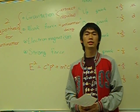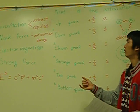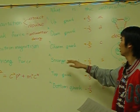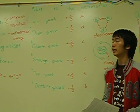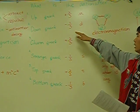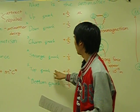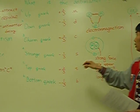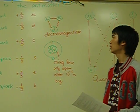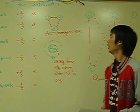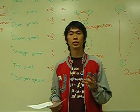The proton is made by three quarks. There are six quarks in our universe: up quarks, down quarks, charm quarks, strange quarks, top quarks, and bottom quarks. They have two charge characteristics: positive two-thirds and negative one-third. The down quark is the lightest and the top quark is the heaviest. The proton is made by two up quarks and one down quark, and the force between them is called electromagnetism. So now I have introduced three forces in our lives.